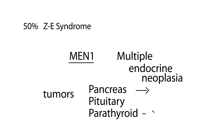The parathyroid tumor produces excess amounts of parathyroid hormone. If you remember the mechanism of how parathyroid hormone acts on the body, it increases calcium levels — so the patient will have hypercalcemia.